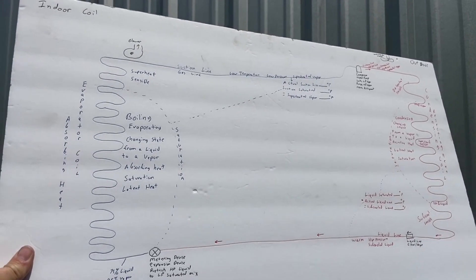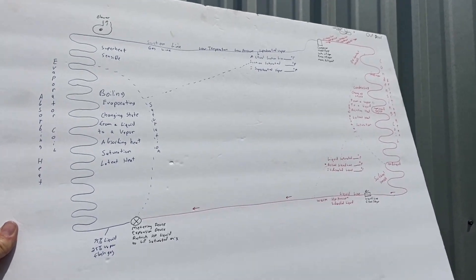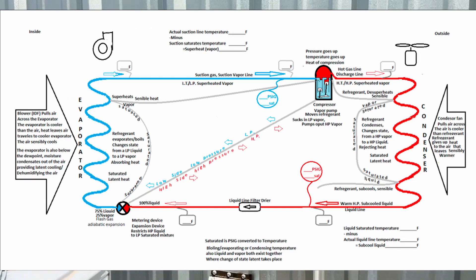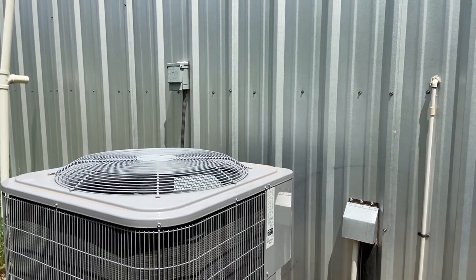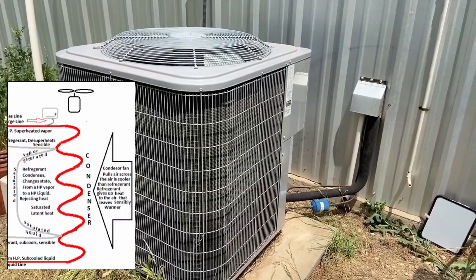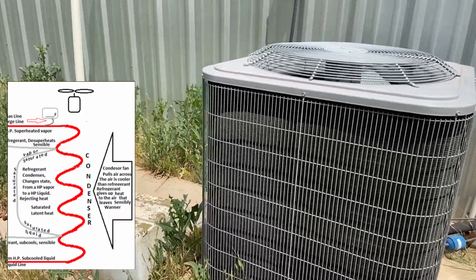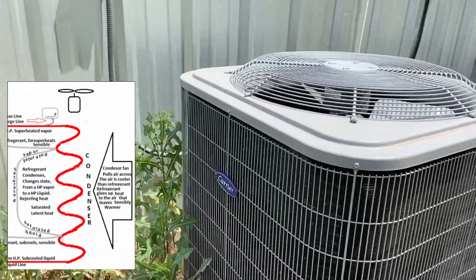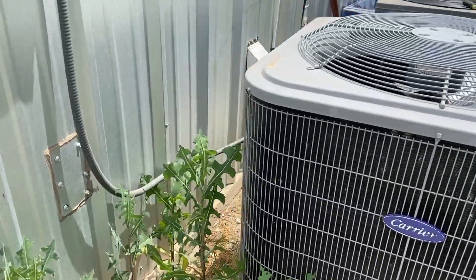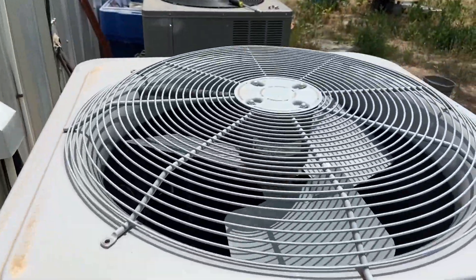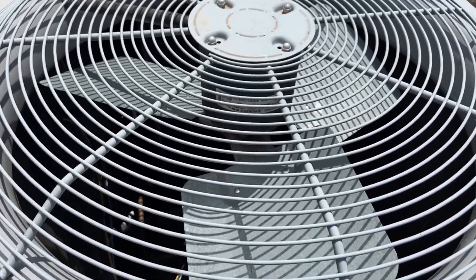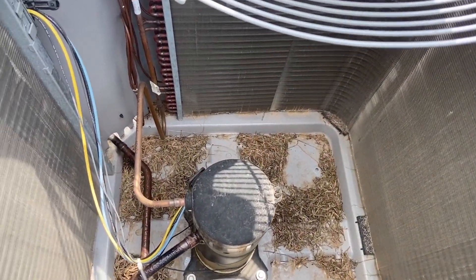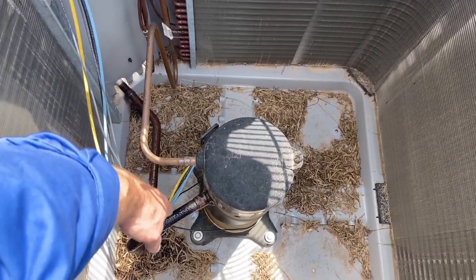We have a refrigeration cycle — hopefully you have this drawn with all the components. We're going to go through the refrigeration cycle on this unit. We can see the condensing coil on the outside. The compressor is located on the inside of this unit, underneath this fan. After we shut the power off and remove the condenser fan motor, we can see our compressor.